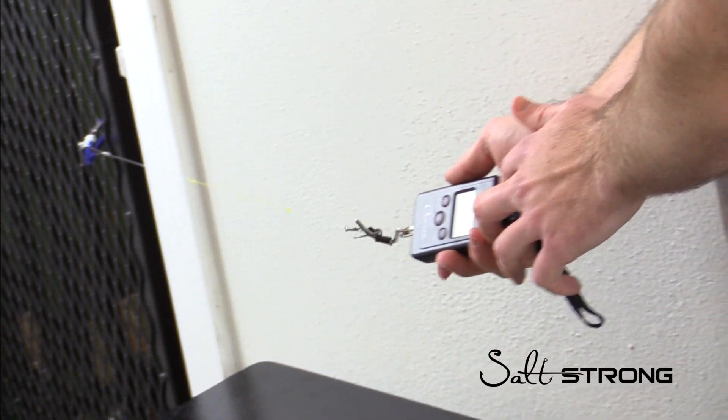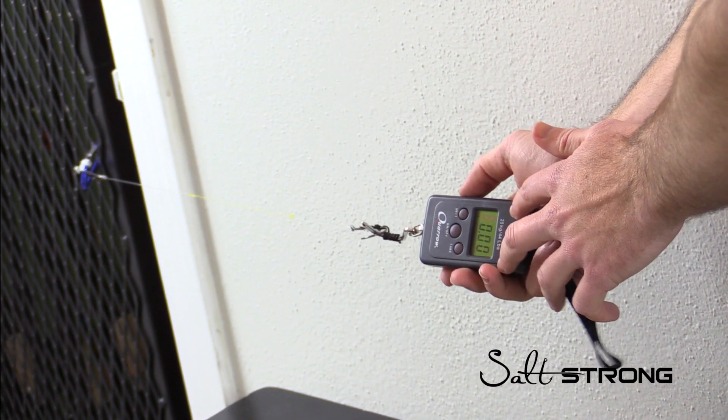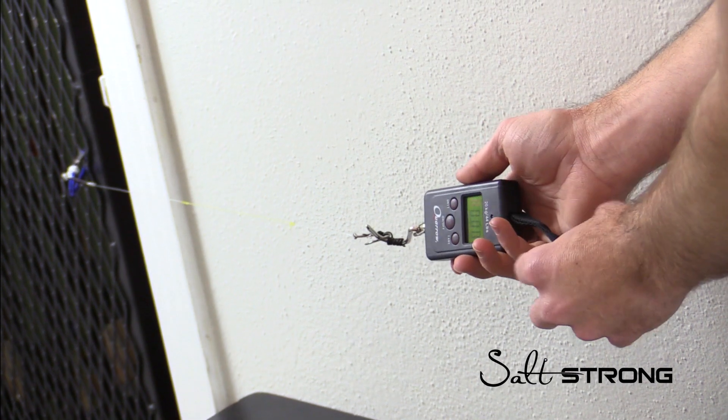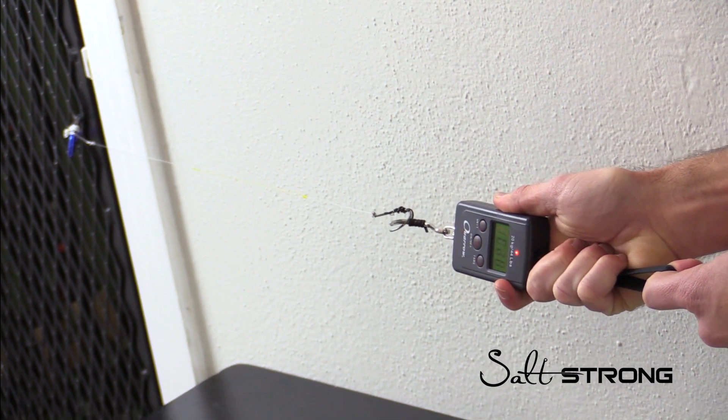But we have a scale attached to it, so whichever one does break we'll be able to see the actual pound breaking strength. Let's go ahead and get started. We have the scale zeroed out, and we're just going to pull on it until one of them breaks.